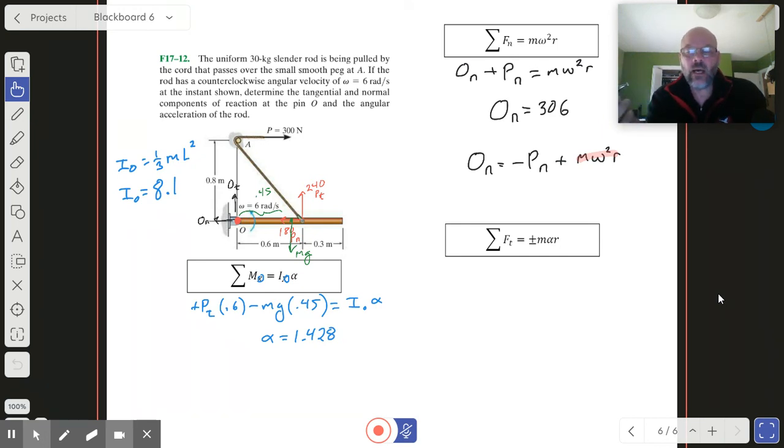But as this thing begins to rotate, then O_n has to do more and more and more, which we might have a good time playing around with. When does O_n equal zero? Is that a possibility? And that would represent some sort of perhaps optimal system configuration where we know, okay, if we rotate this thing just right, that pin at O doesn't have to do very much. But it's going to do a lot and it's got to supply 306 newtons.